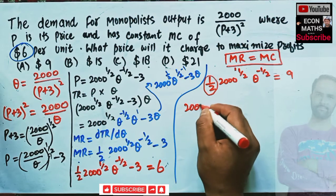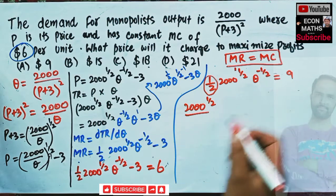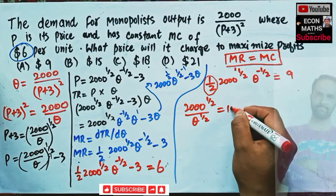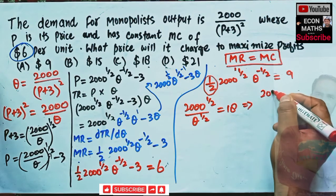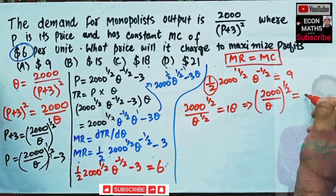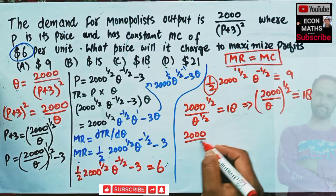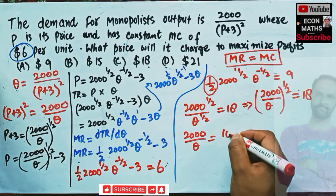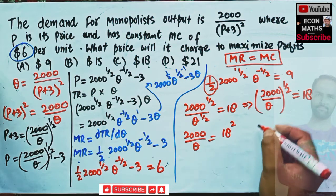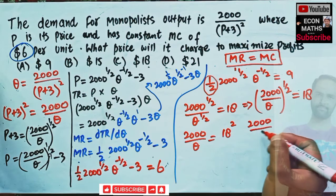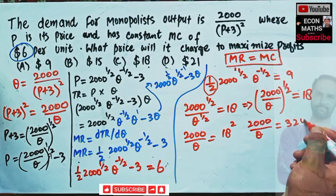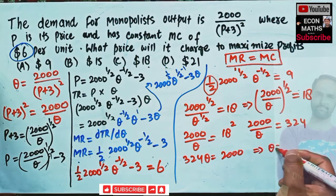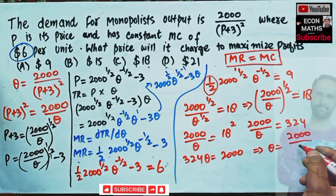Rearranging, we get (2000/Q)^(1/2) = 18. Transposing the exponent to the right-hand side: 2000 / Q = 18² = 324. Therefore 324·Q = 2000, which implies Q = 2000 / 324 ≈ 6.2. So our optimal profit-maximizing quantity is approximately 6.2 units.